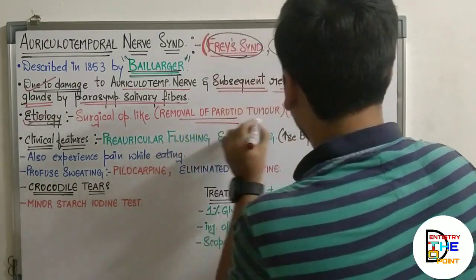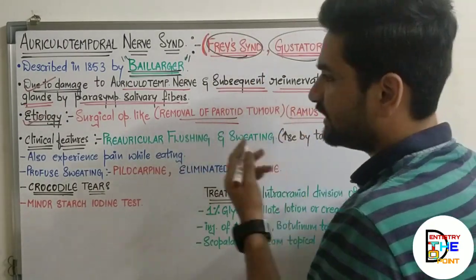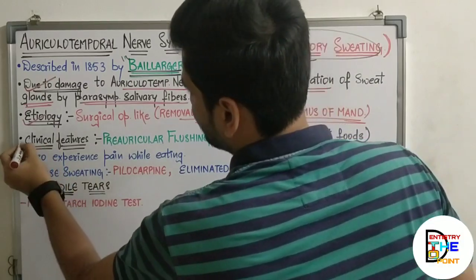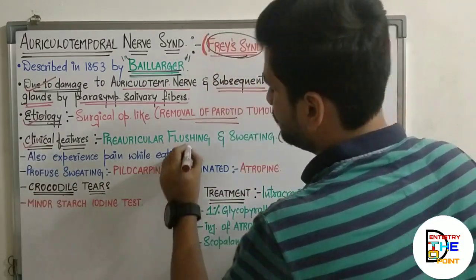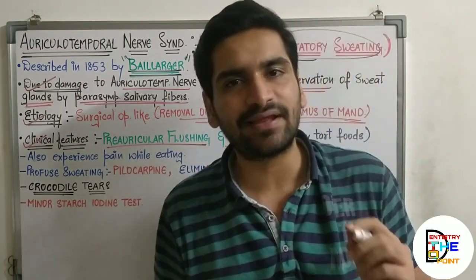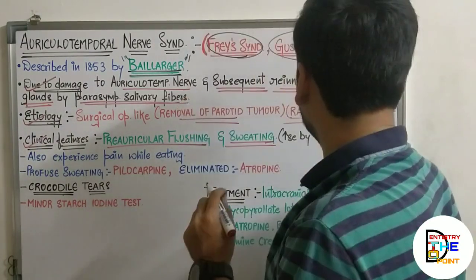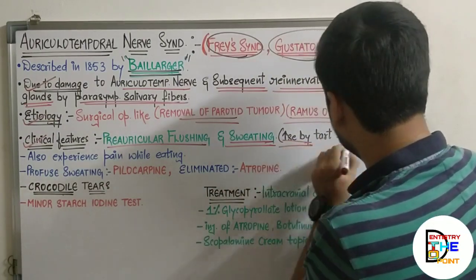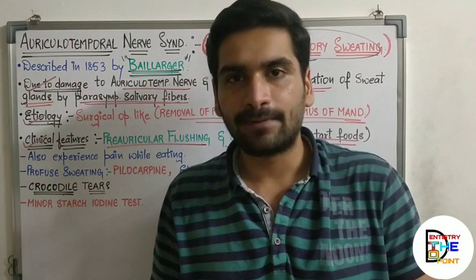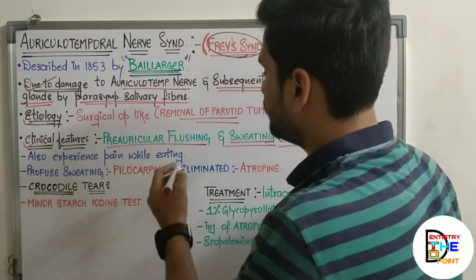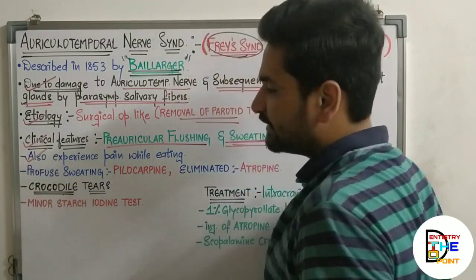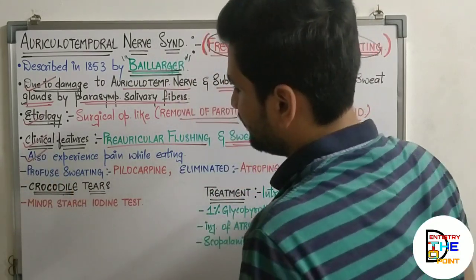The clinical features include pre-auricular flushing and sweating. The sweating is increased by tart foods such as citrus foods, pickles, or lemon-like foods. The patient may also experience pain while eating in this region.